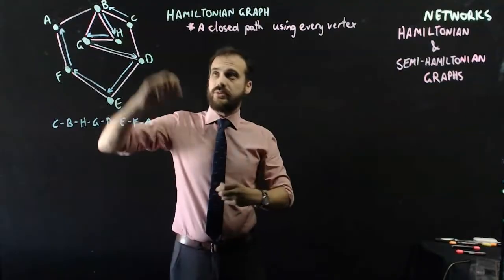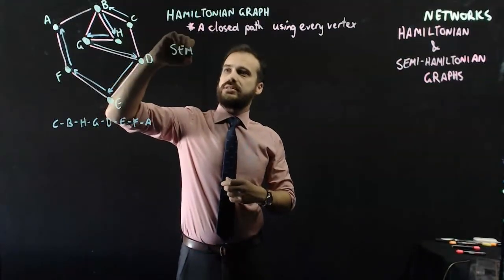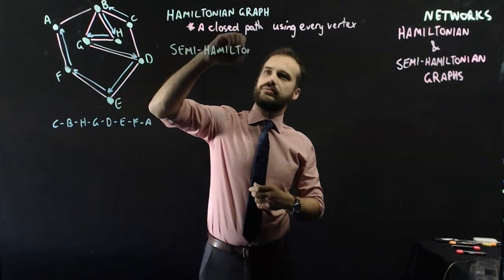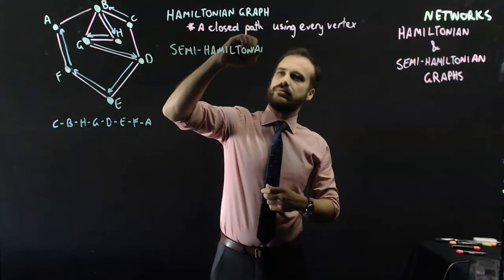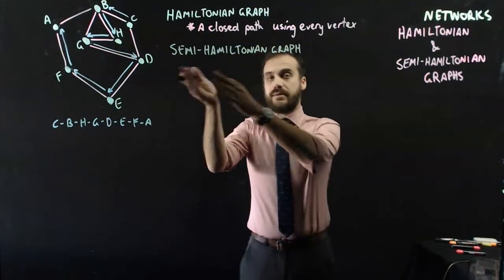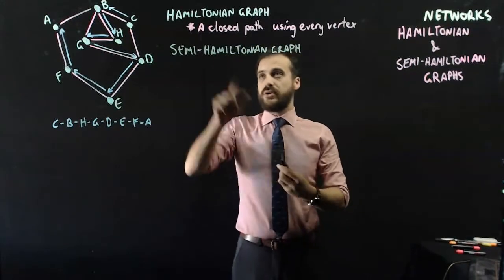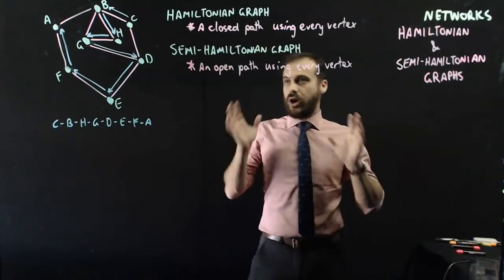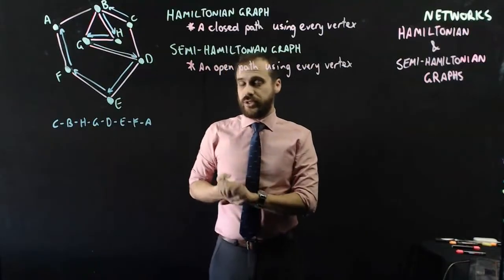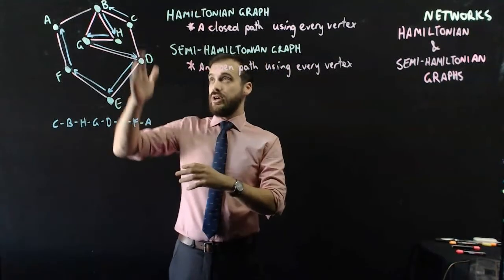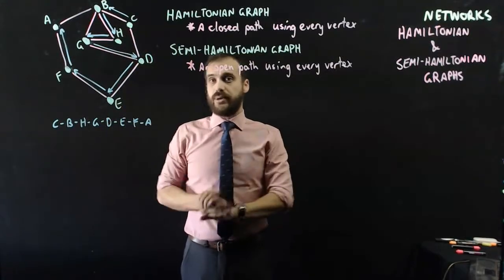But what I can say with certainty is that it is definitely a semi-Hamiltonian graph. Now, obviously, a semi-Hamiltonian graph is going to be an open path using every vertex. I know it's a semi-Hamiltonian graph because I've just achieved it. I've just gotten through all of the towns using an open path.